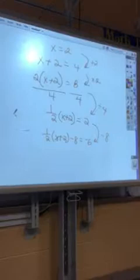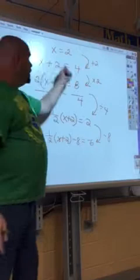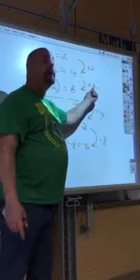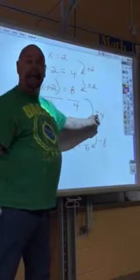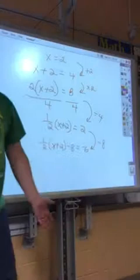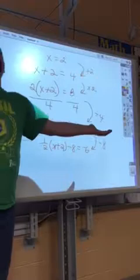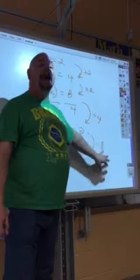If you followed along and you saw and you agreed that yes, as long as I do it to both sides, I can add any number. And yes, as long as I do it to both sides, I can multiply by any number. And yes, as long as I do it to both sides, I can divide by any number. And yes, as long as I do it to both sides, I can subtract any number. That's what you're allowed to do. You're allowed to do anything you want as long as you do it to both sides of the equation.